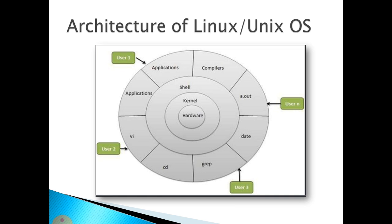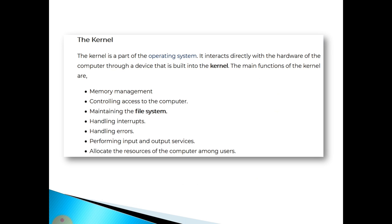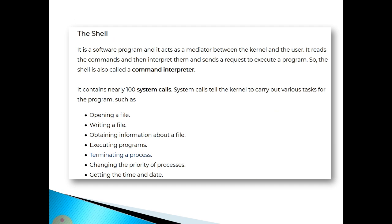This is the standard layer architecture of any Linux or Unix operating system. The kernel is the part of the OS that interacts directly with the hardware through built-in device support. The main functions of the kernel include memory management, controlling hardware access, maintaining the file system, handling interrupts and errors, performing I/O services, and allocating computer resources among users.